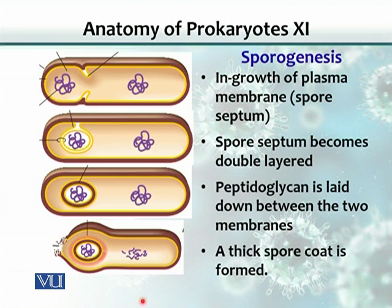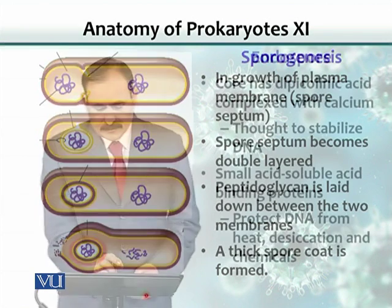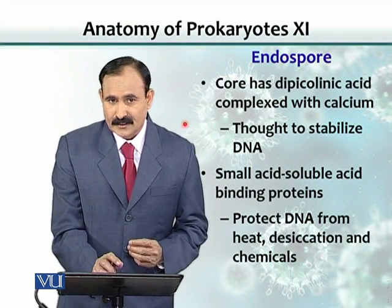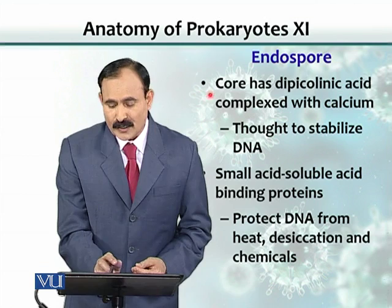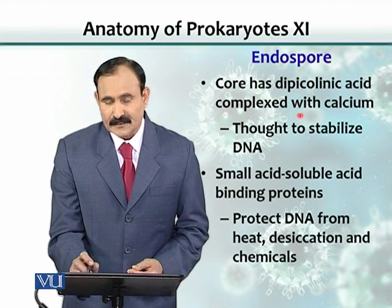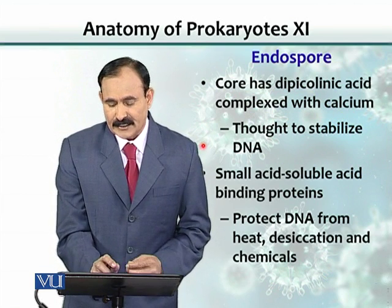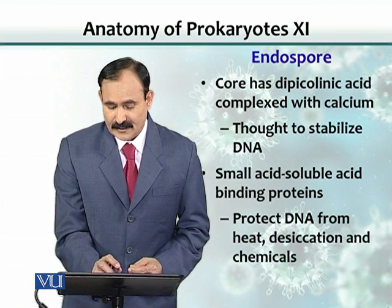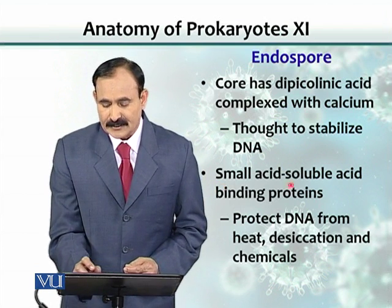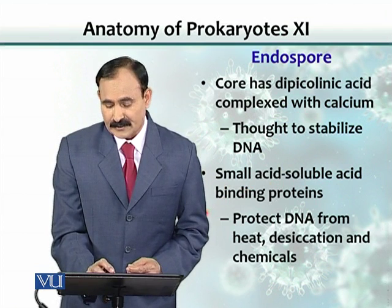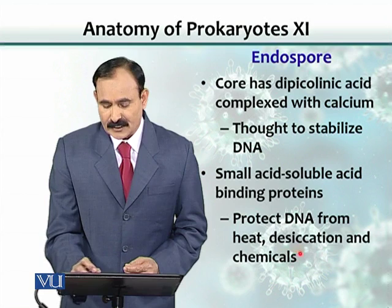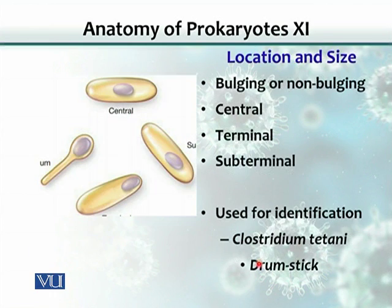The spore is the most resistant thing to kill. The spore has a substance called dipicolinic acid (DPA), complexed with calcium, and this is thought to stabilize the DNA. There is another substance — small acid-soluble proteins — which also protect DNA from heat, desiccation, and various chemicals.